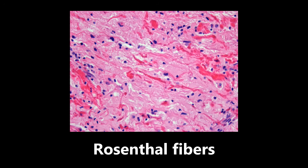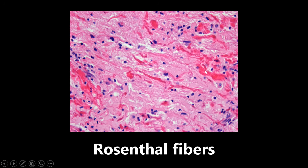This next one is an example of Rosenthal fibers. These are clumped intermediate filaments that you can see all over here, and they're found in astrocyte processes. They are GFAP positive — I believe that stands for glial fibrillary acidic protein. The important thing to know is that they're seen in pilocytic astrocytoma. So Rosenthal fibers are intermediate filaments that are clumped together, seen in pilocytic astrocytoma.